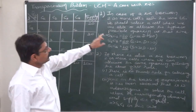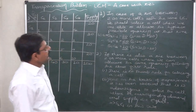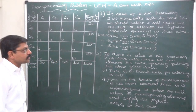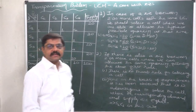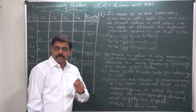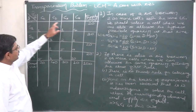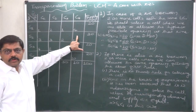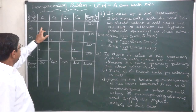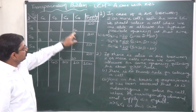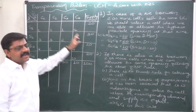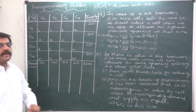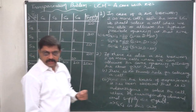In case of a tie between two or more cells with the same least cost, we should select the cell where we are able to allocate the highest possible quantity. Among those two or more cells with the same least cost that form a tie, select the one in which we can allocate the most quantity.